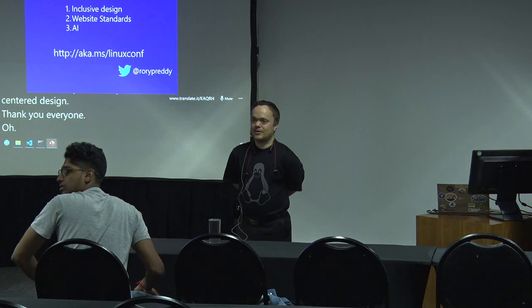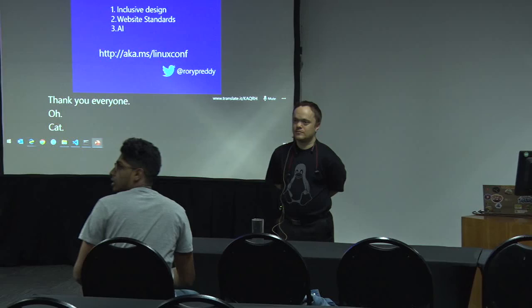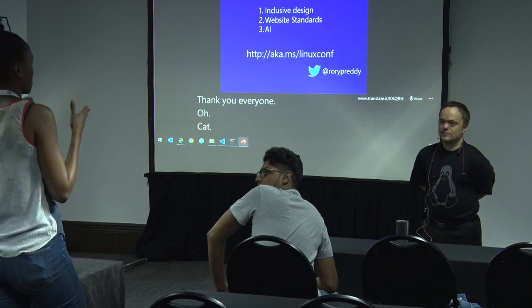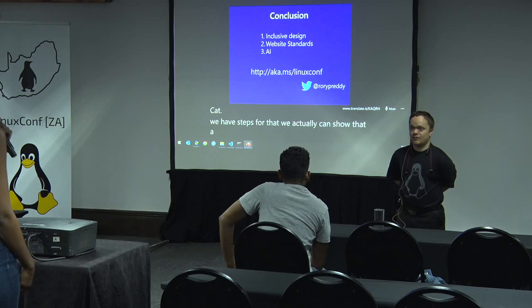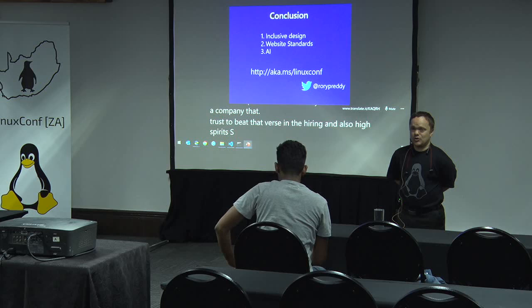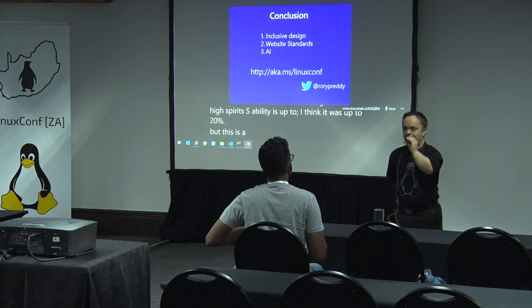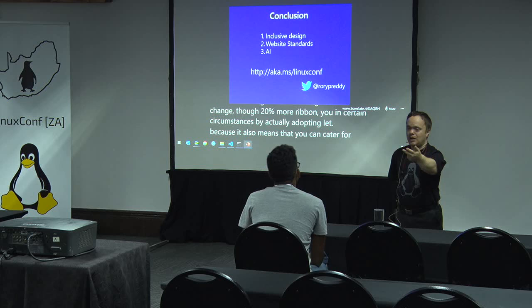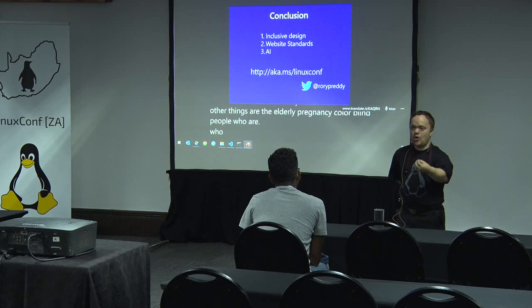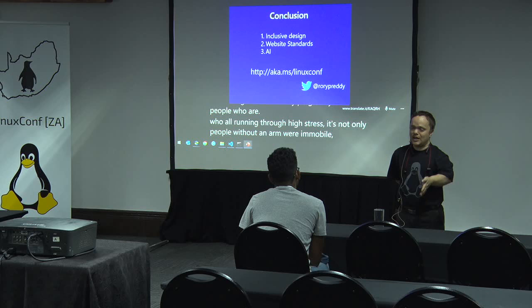Final question: have you ever quantified the effect accessibility has on the business bottom line? Yes — a company that tries to be diverse in hiring and hires for accessibility can see up to 20% more revenue in certain circumstances. It's a long-term cultural change, but it also means you cater for the elderly, pregnancy, color blind users, and high-stress situations — it's not only about people without an arm or mobility issues, it's the entire perspective.